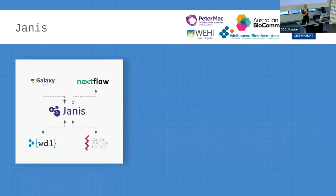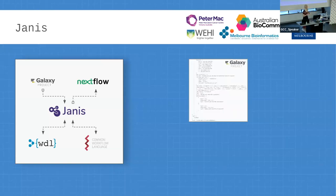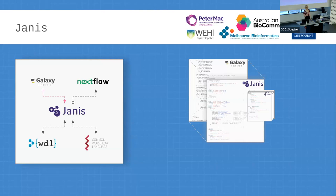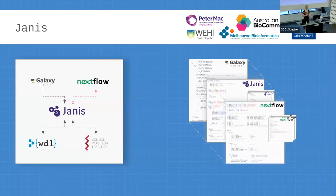Once we had ingest units, we realized we could actually do end-to-end translations — we don't really need the Janus in the middle, it can just be a middleman. So what you can do now is if you have a Galaxy workflow, you could take that workflow or tool, run Janus translate — which is our new feature — and it will ingest the Galaxy into an in-memory representation in Janus. For a workflow, all those tools will be discovered and translated to an in-memory representation. Then if you specified you wanted to go out to Nextflow, it would transpile to Nextflow and write it to file.